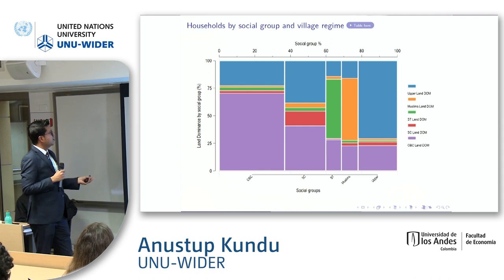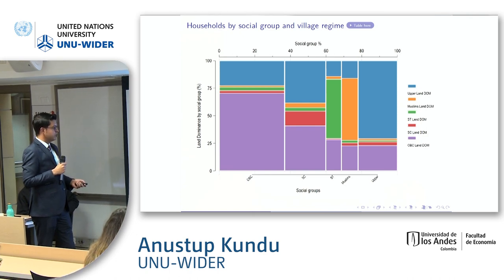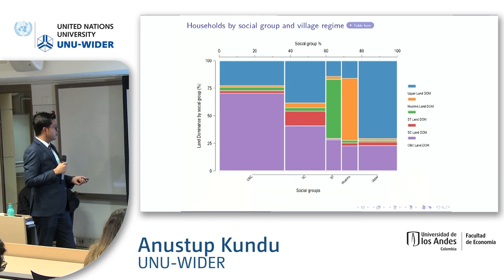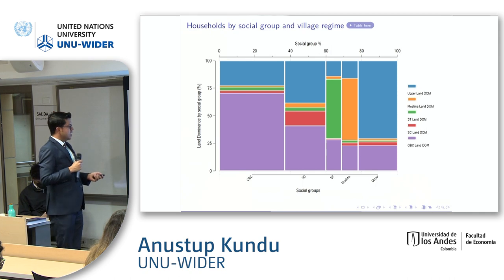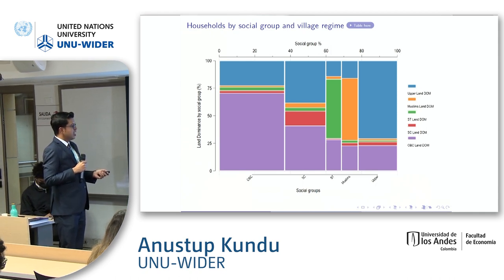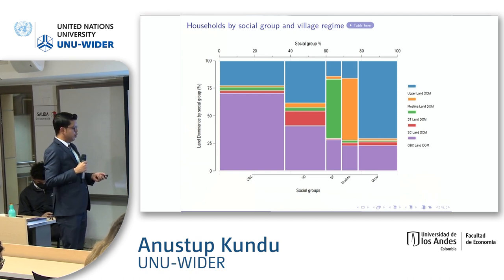Looking at the individual level, these are the groups — OBCs, SC, ST, Muslim, and upper caste — and this shows where they are living. OBCs are still the dominant group with a major fraction, upper caste is still dominant here, SCs represent a very small fraction, STs are living in their own areas, and the same holds for Muslims.